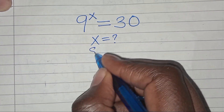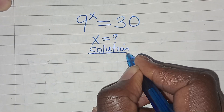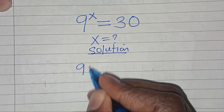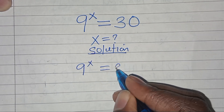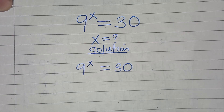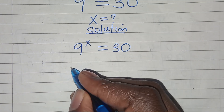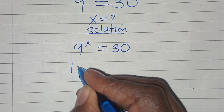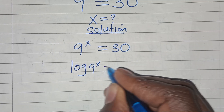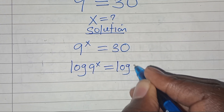Now, for the solution, we have 9 to power x equals 30. To solve for x, we introduce logarithm on both sides, so that we have log of 9 to power x equals log 30.